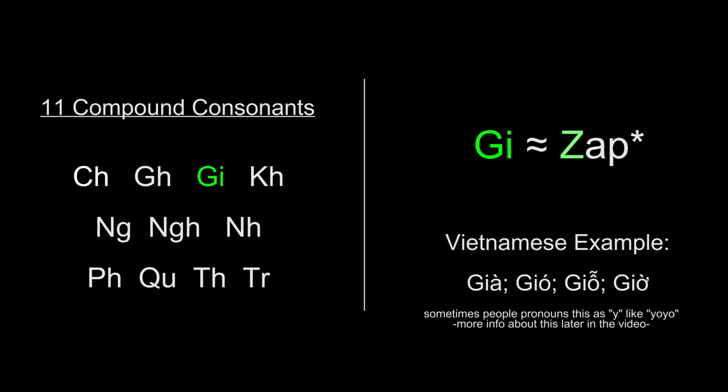Like a Z in English, zap. Some examples in Vietnamese are Zah, zah, zuh, zuh.